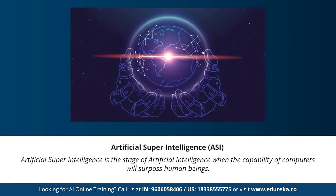Moving on to the last stage: artificial super intelligence. This is the stage of AI when the capability of computers will surpass human beings. Artificial super intelligence is currently seen as a hypothetical situation, as depicted in movies and science fiction books — machines taking over the world. Such systems don't currently exist; we don't have any machine capable of thinking or reasoning better than a human. Artificial super intelligence refers to any system that is much smarter than humans.